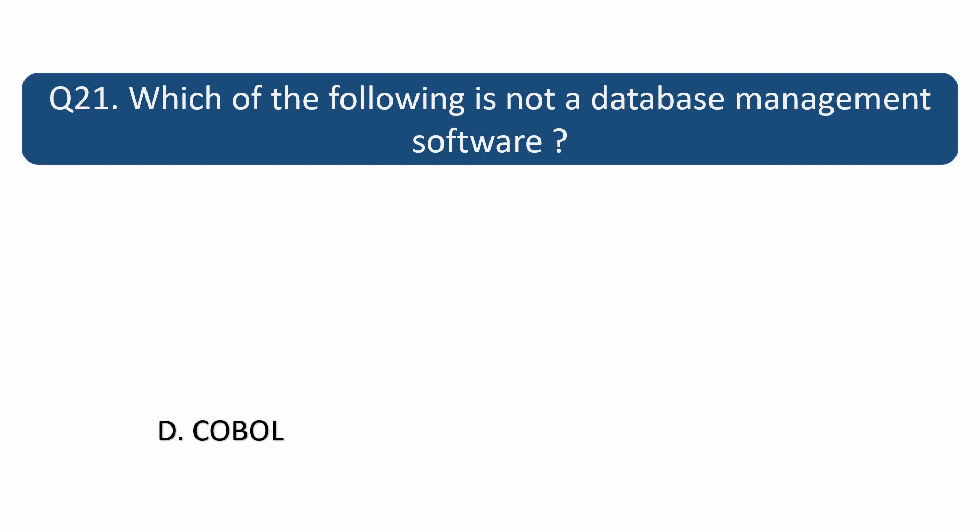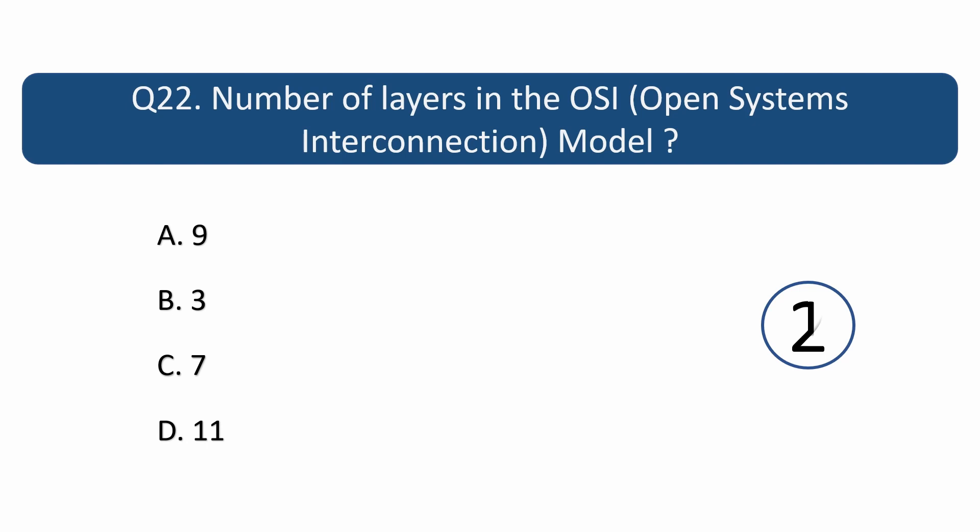Question number 22. Number of layers in the OSI, Open Systems Interconnection, model? Answer is C. 7.